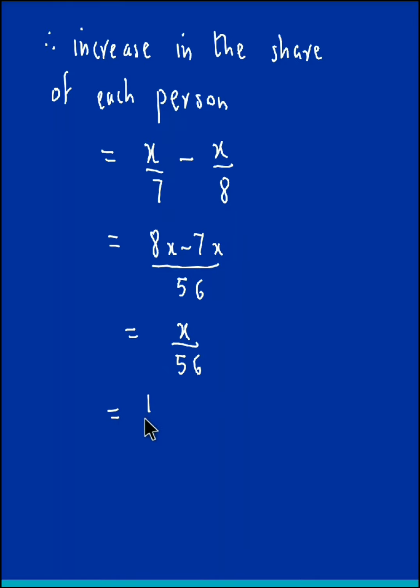This could be written as 1/7 of x/8. So we could say the increase is 1/7 of the initial share, where x/8 is our initial share.